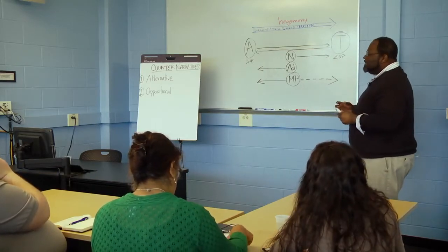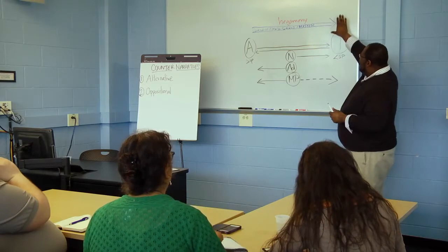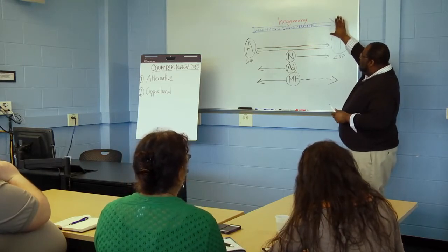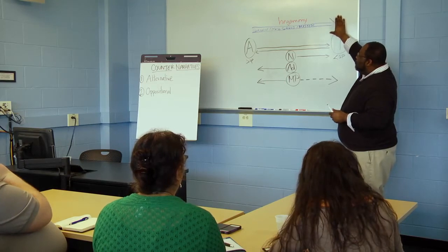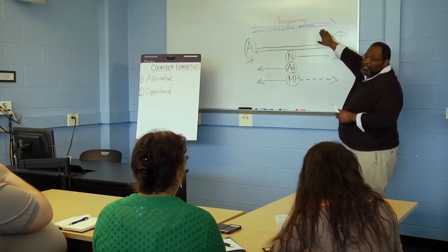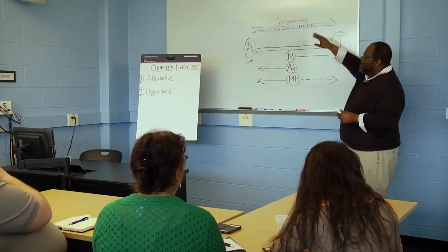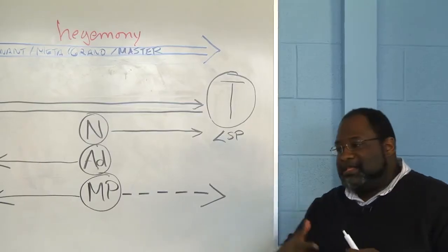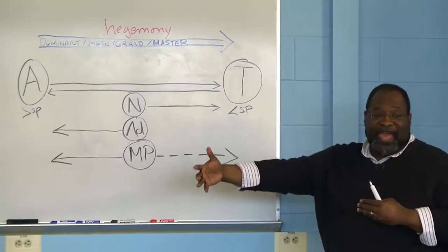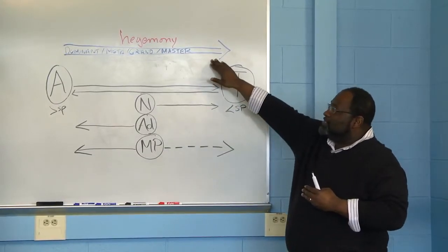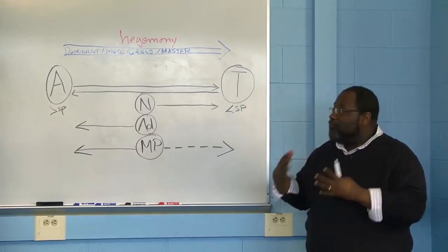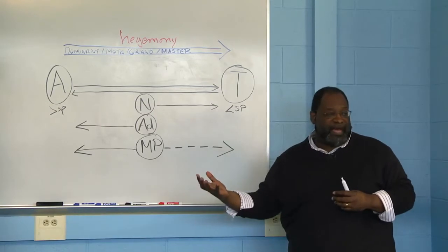The alternative narrative seeks to add to or make more complex or more full the experience or the story presented by the grand narrative. It is either presenting new facts, additional facts that are not expressed in this narrative, or is offering that narrative from a different perspective.